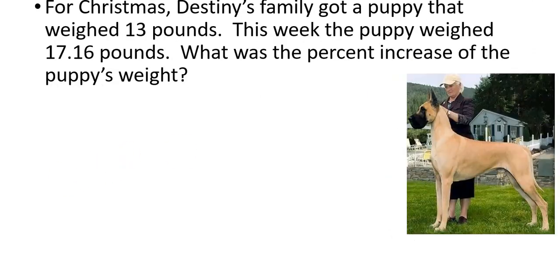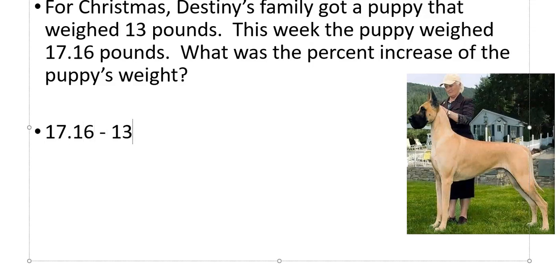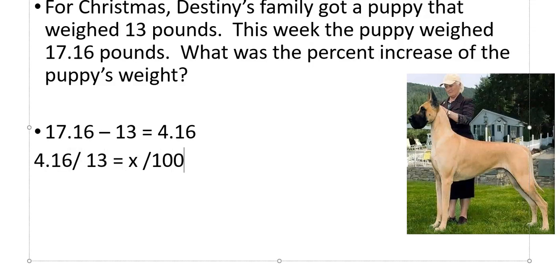For Christmas Day, Destiny's family got a puppy that weighed 13 pounds. This week the puppy weighed 17.16 pounds — what is the percent increase? I do 17.16 minus 13, and the puppy has gained 4.16 pounds. Then 4.16 over the original 13 equals X over 100. 4.16 times 100 divided by 13 gives me 30.89%, rounding to 30.9%.